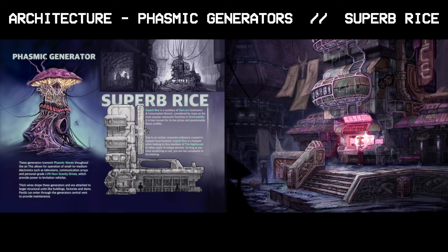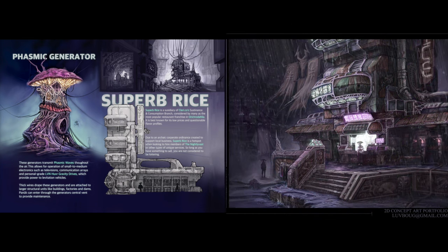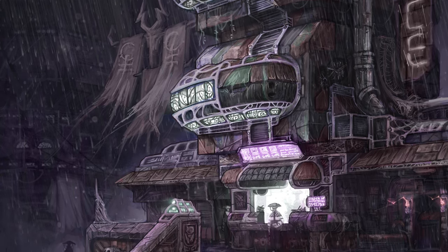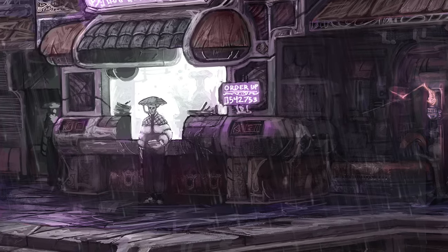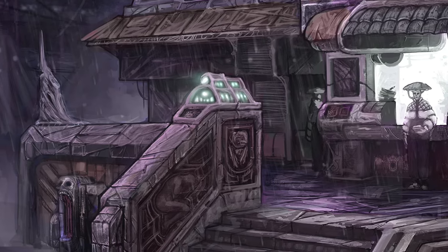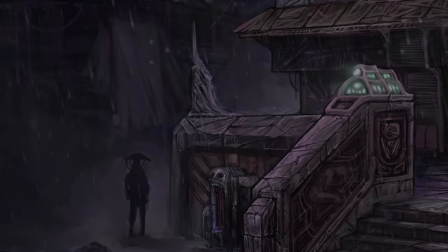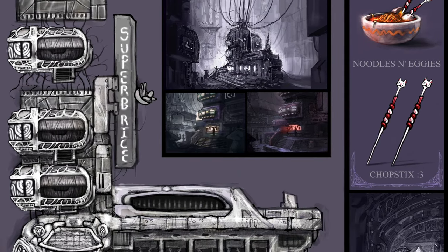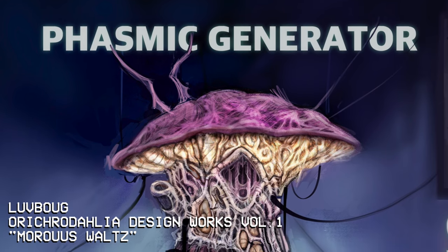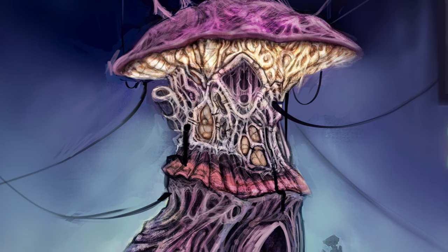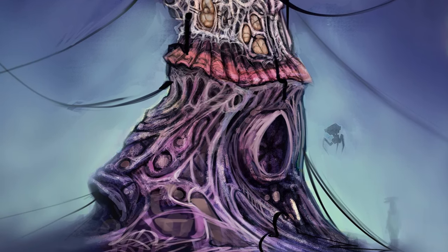This is another piece I touched up for portfolio purposes. Superb Rice is a subsidiary of Clerico's sustenance and consumption branch, considered by many as the most popular restaurant franchise in Oricredalia — best known for its low prices and questionable flavor profiles. Due to an archaic corporate ordinance created to support local business, Superb Rice is a hotspot for hiring members of the nightly vest or other types of unique services. These are phasmic generators that transmit phasmic waves throughout the air, allowing operation of small to medium electronics such as televisions, communication arrays, and personal grade LUN hover gravity drives. Thick wires drape these generators and are attached to larger structural units. Panuk can enter through the generator's central vent to provide maintenance.